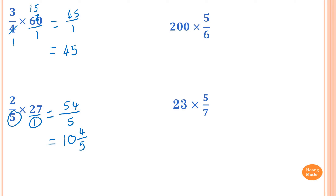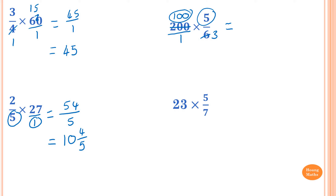200 times 5 over 6. So 200 is the same as 200 over 1. And 200 and 6 can both divide by 2: half of 200 is 100, and half of 6 is 3. So now all I need to do is multiply: top times top, so 100 times 5 is 500, over 3 times 1 is 3. Then convert to a mixed numeral. 3 goes into 500: 3 goes into 5 is 1, remainder 2; 3 goes into 20 is 6 times (6 times 3 is 18), remainder 2; 3 goes into 20 again is 6 times, remainder 2. So the answer is 166 and 2 over 3.